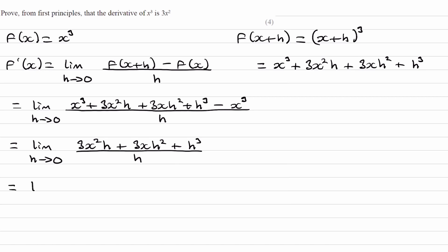We can then divide by h, so it becomes 3x squared plus 3x h plus h squared.